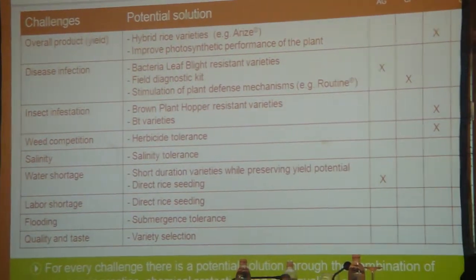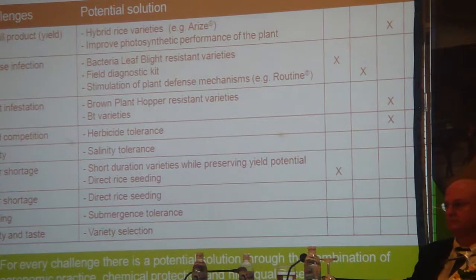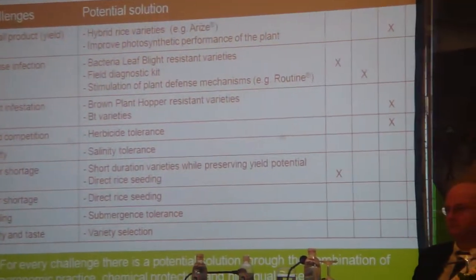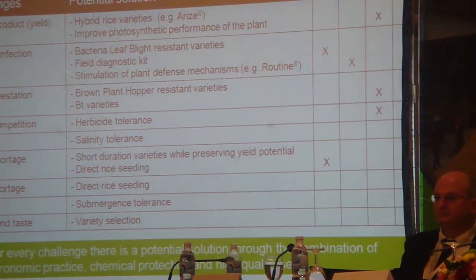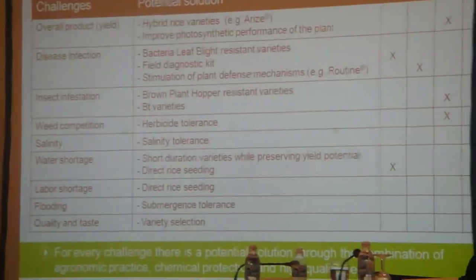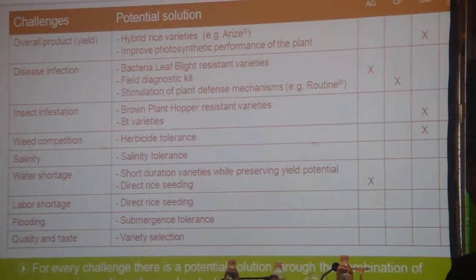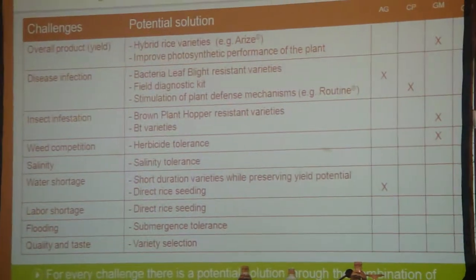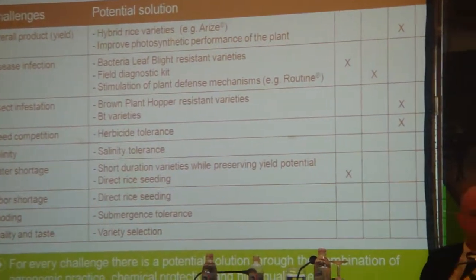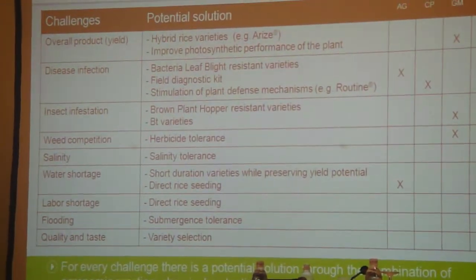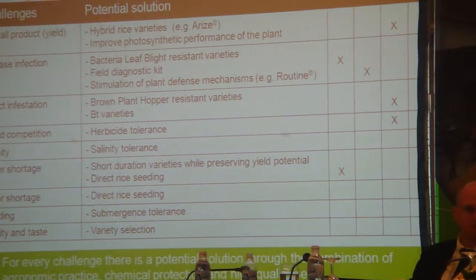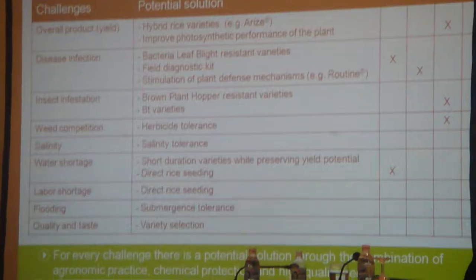For disease infection, we are addressing bacterial leaf blight resistance through our breeding program. We are also working on a field diagnostic kit so that farmers will be able to early detect the presence of fungus and make the appropriate treatment. We are also finding chemical solutions that stimulate the plant's defense mechanisms. For insect infestation, we are working on varieties that will withstand the brown plant hopper, and we are also developing BT variety solutions.